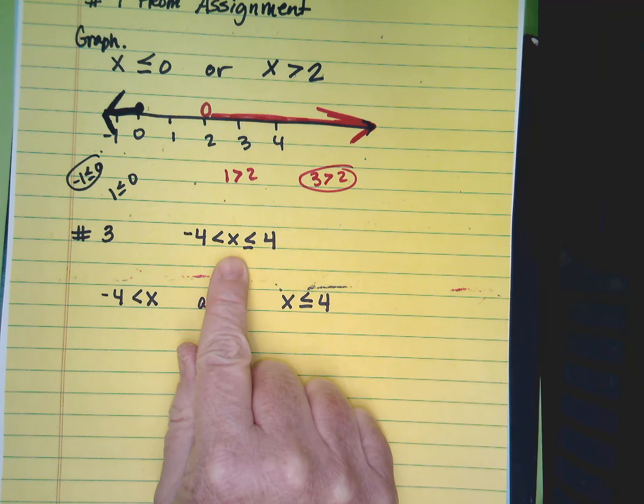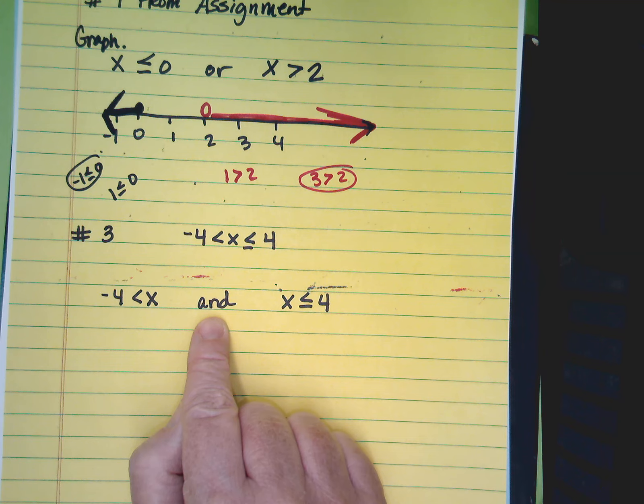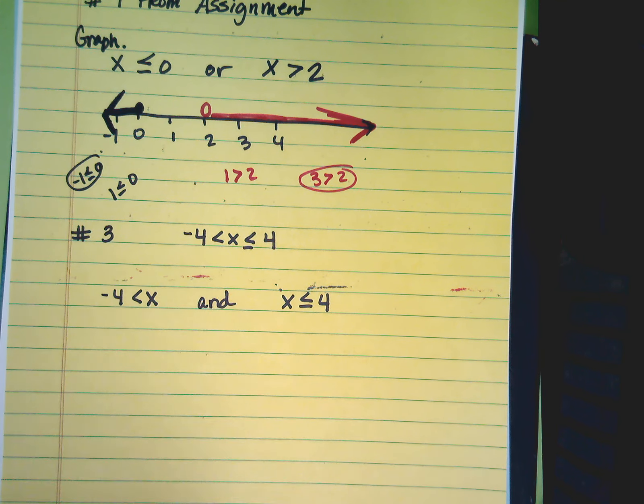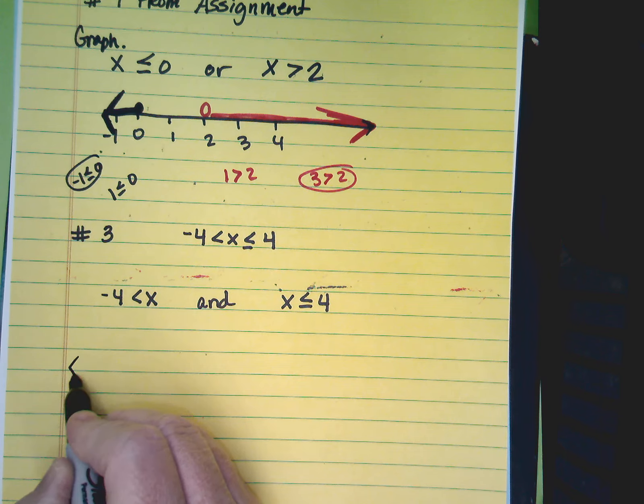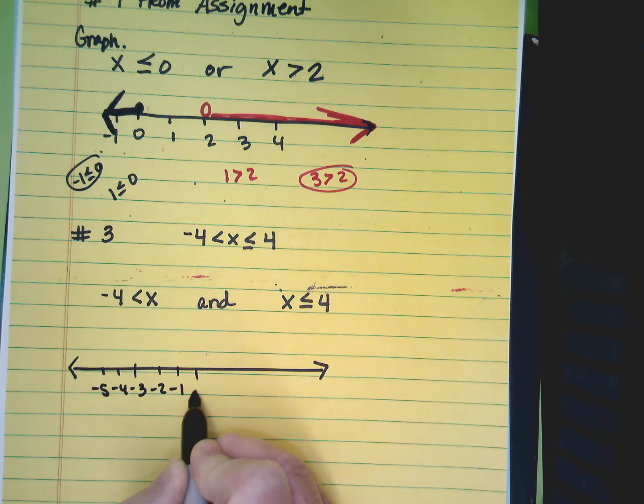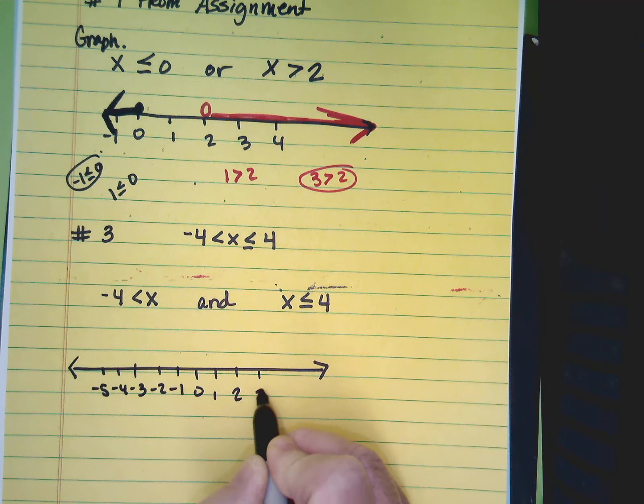I'm going to jump down and do number 3. Number 3 has to be split into two parts. So what if it doesn't automatically come in there? Sometimes it will. Sometimes it won't. So negative 5, 4, 3, negative 1, 2, 3, 4, 5.